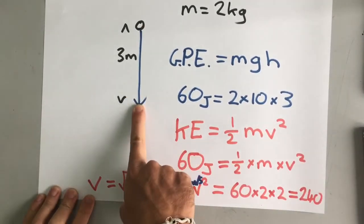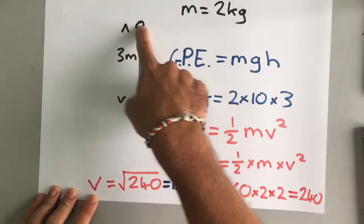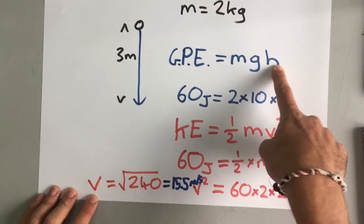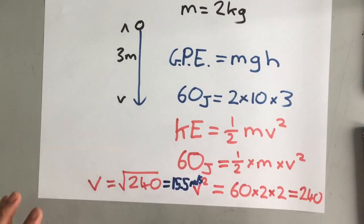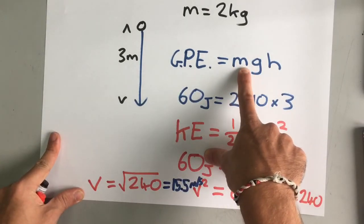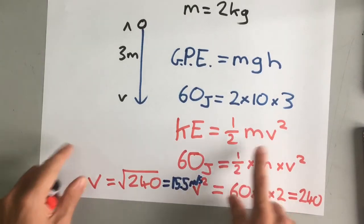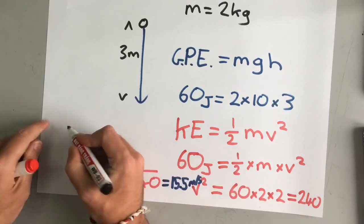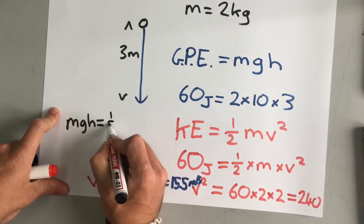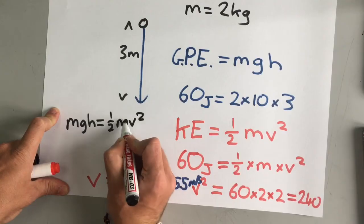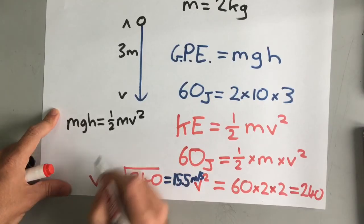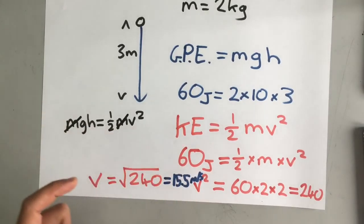So, you can work out how fast something is going just by knowing its mass, its gravity, and its height. Now, we can go one step further because, actually, if you've noticed, we've got mass here, mass times gravity times height, and we've also got mass here. And if we're saying that gravitational potential energy and kinetic energy are equal to each other, then mgh equals half mv squared, where that's the potential energy at the top, and that's the kinetic energy at the bottom. m is on both sides. Actually, we don't even need to know the mass.